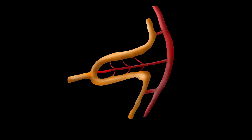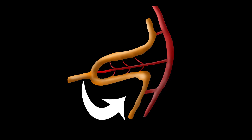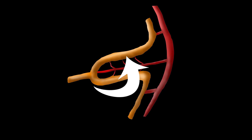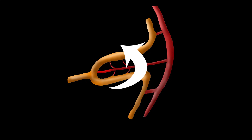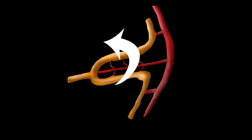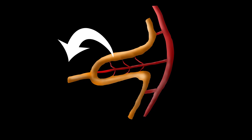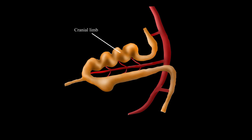As the mid-gut lengthens, it also rotates 90 degrees counterclockwise around the axis of the combined superior mesenteric artery and umbilical cord. The cranial limb of the mid-gut, now on the right side of the umbilical cord, becomes highly convoluted throughout the next few weeks.